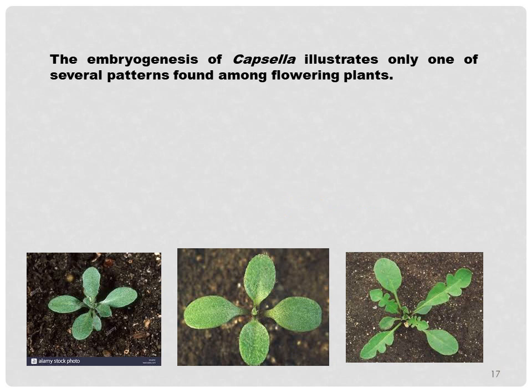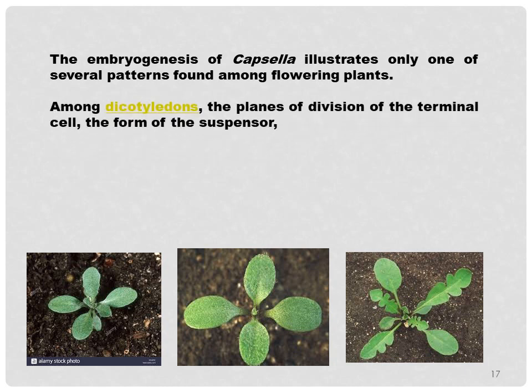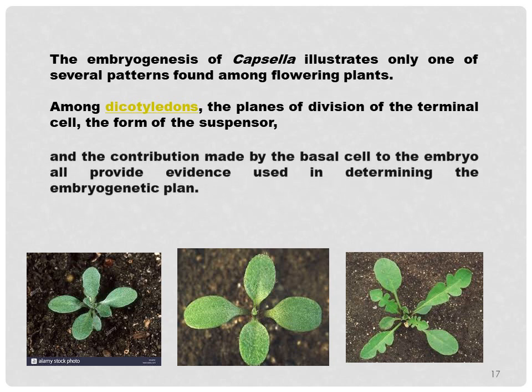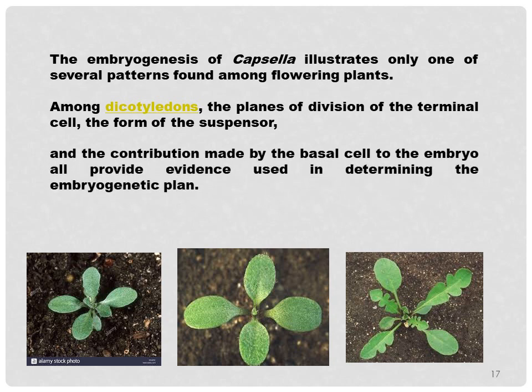The embryogenesis of this plant illustrates only one of the several patterns found among flowering plants. Among dicotyledons, the planes of division of the terminal cell, the form of the suspensor, and the contribution made by the basal cell to the embryo all provide evidence used in determining the embryo genetic pattern.